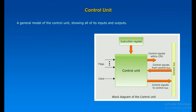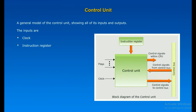A general model of a control unit shows all of its inputs and outputs. The inputs are: Clock — this is how the control unit keeps time; the control unit causes one micro-operation or a set of simultaneous micro-operations to be performed for each clock pulse, sometimes referred to as the processor cycle time or clock cycle time. Instruction register — the opcode and addressing mode of the current instruction are used to determine which micro-operations to perform during the execute cycle. Flags — needed by the control unit to determine the status of the processor and the outcome of previous ALU operations; for example, for the ISZ instruction, the control unit will increment the PC if the zero flag is set.